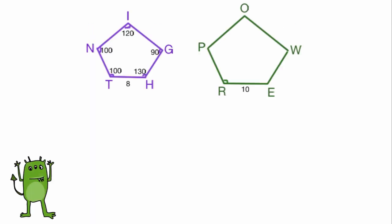So let's look at some examples. We have two pentagons, night and power, and they're similar. Therefore, we know the corresponding angles must be equal. Can you tell me the measure of angle R? Well, angle R corresponds to angle T, so the measure must be 100 degrees.